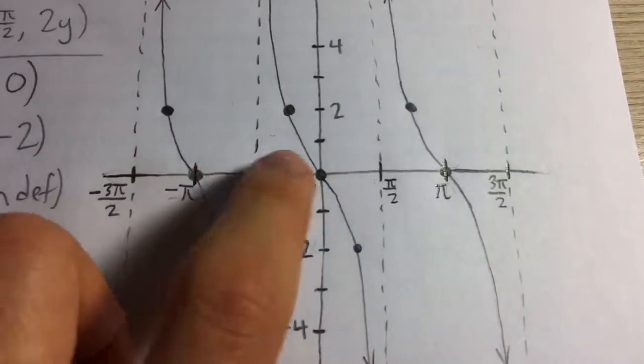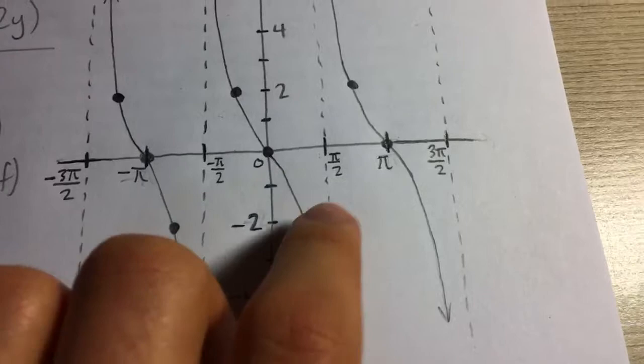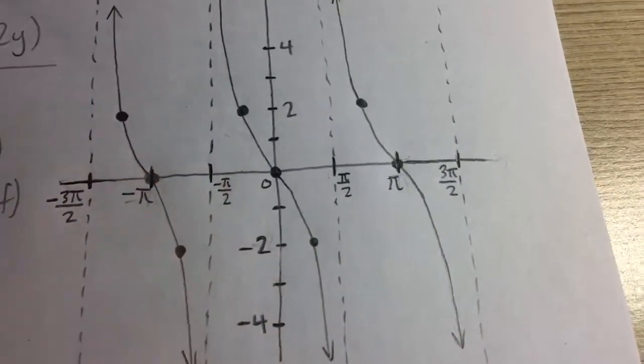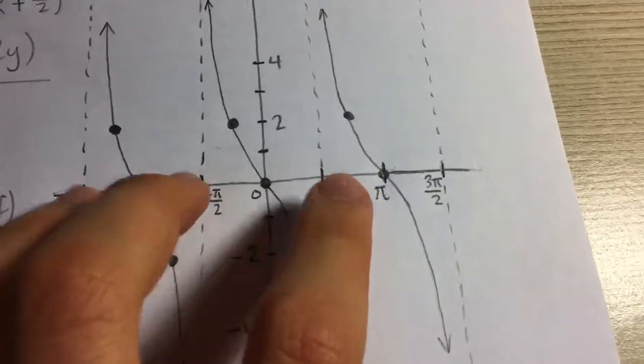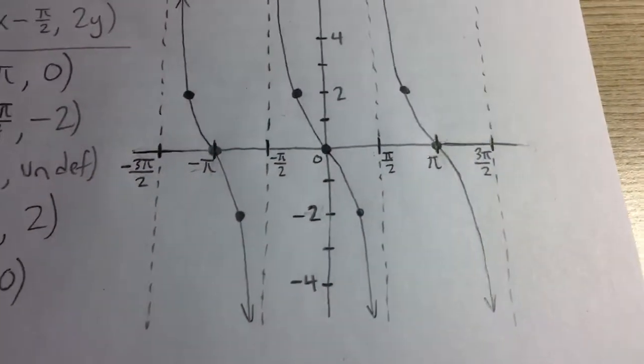Similarly, if I have this point, I just add pi to find the next zero, or this point, I just add pi, etc. And that way, this is one period but if you want to draw multiple periods, you just repeat the points.